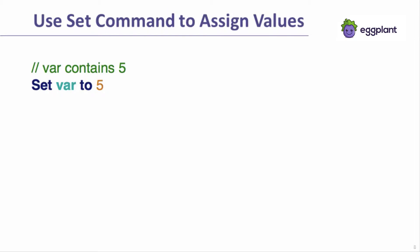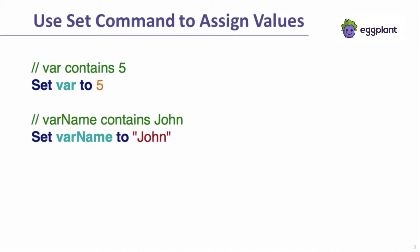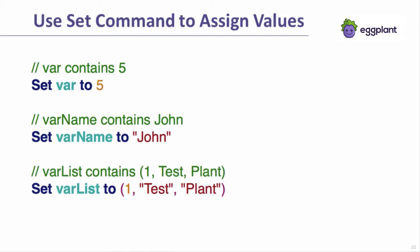Let's cover some examples of using the set command to store different values into variables. In the first example, the variable's name is var and the value is the number 5. The second example shows the string John being stored into the variable var name. The last example shows a list being stored into a variable named var list. The list contains a combination of numbers and strings, but because Sensetalk variables are typeless, no special handling of this mix of value types is needed.